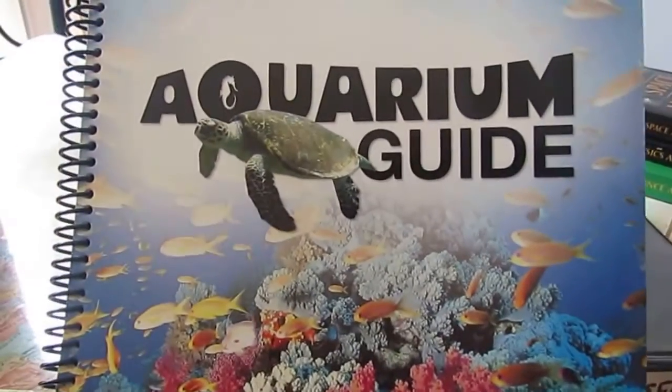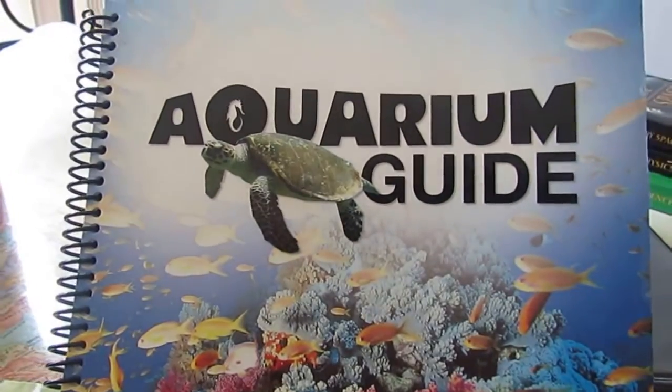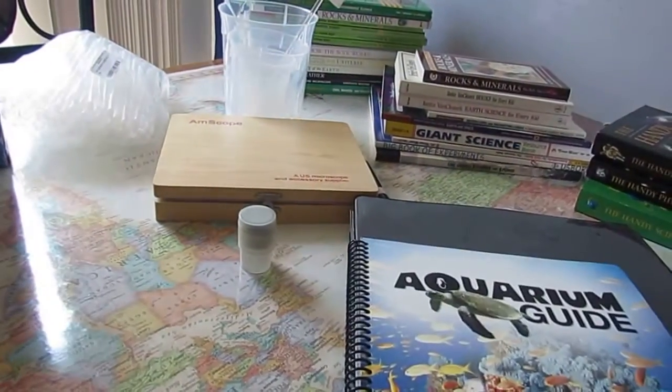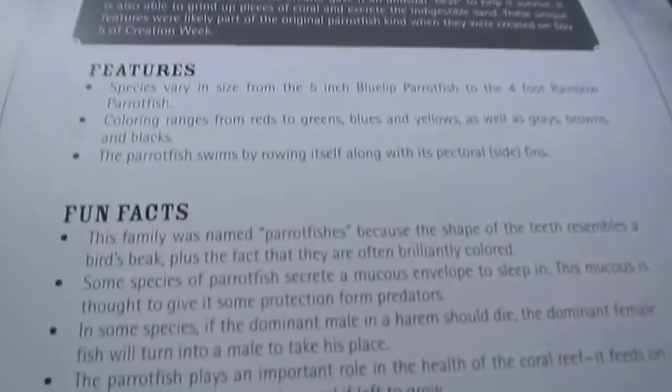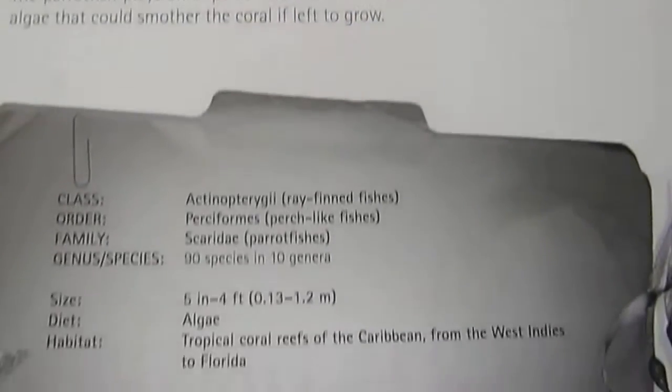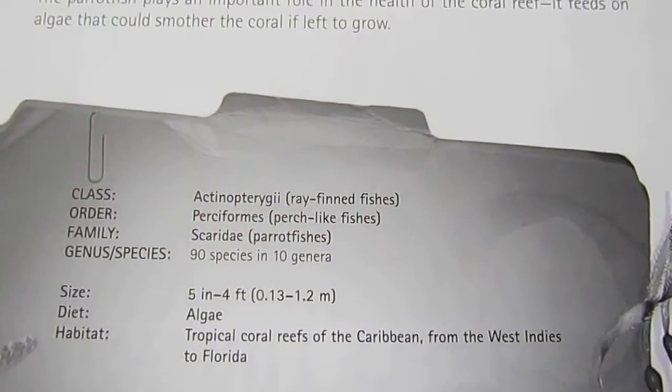They also have, well I also have, the Aquarium Guide by the same company, Answers in Genesis. So when I open it up, it shows you this is the parrot fish. And it also gives you the classification of it.